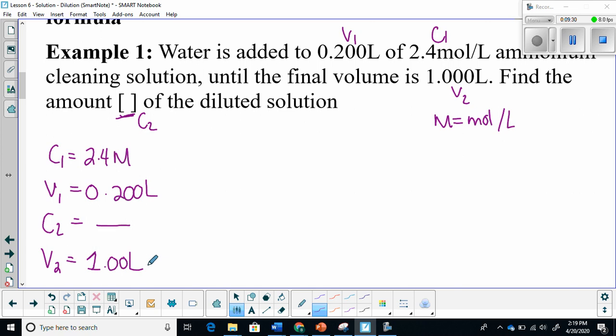C1 is equal to 2.4 moles per liter. So for the simplicity of the example, I am just going to use capital M. Remember capital M represents moles per liter. The volume is 0.200 liters. C2 is our unknown. And then V2 is 1 liter. From there we are going to use our formula, C1V1 is equal to C2V2. We are interested in isolating for C2, so I divide both sides by V2. That eliminates V2 on this side. Whatever I do to one side I do to the next. And then C2 is equal to C1V1 over V2.